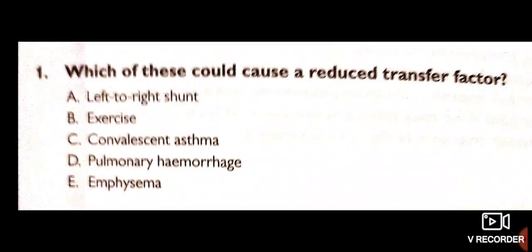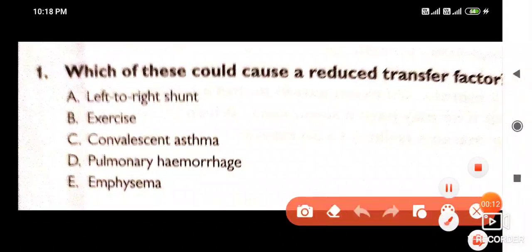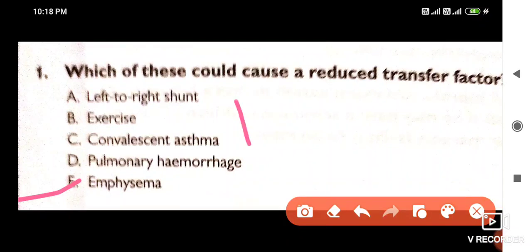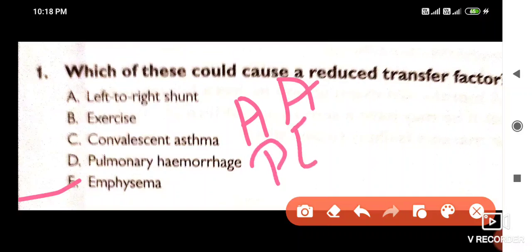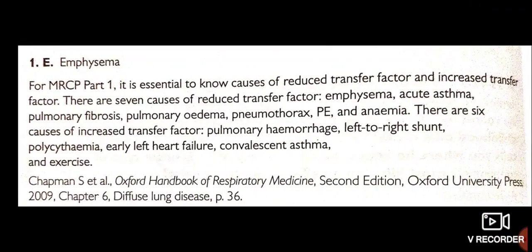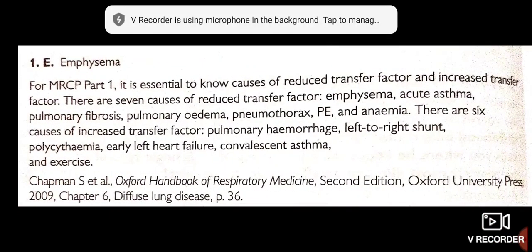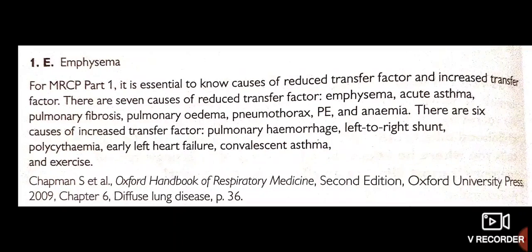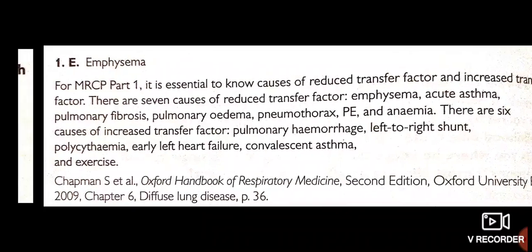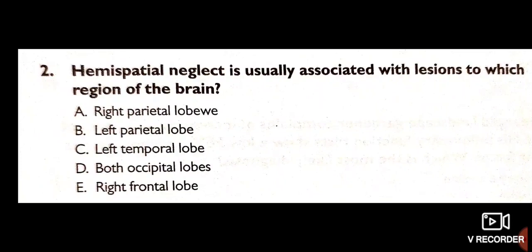Good evening doctors, welcome again. Today we are going to discuss clinical sciences MCQs. Which of these could cause a reduced transfer factor? Reduced transfer factor is caused by emphysema, acute asthma, pulmonary embolism, pulmonary edema, pulmonary fibrosis, pneumothorax, and anemia. These are all causes of reduced transfer factor.